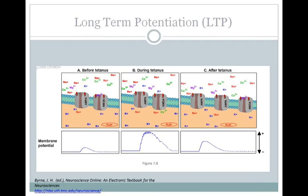One of the most well-studied forms of synaptic plasticity is long-term potentiation, or LTP. LTP was first discovered in hippocampal neurons and is thought to be involved in learning and memory. The form of LTP that occurs in the hippocampus relies on the NMDA receptor, which is an ionotropic receptor that binds to glutamate. The NMDA receptor is unique because it also requires a second condition to open: you need to remove the block of magnesium over the pore, which can occur if the membrane potential of that cell becomes depolarized, kicking out that magnesium block.